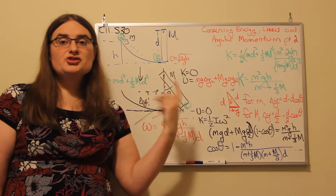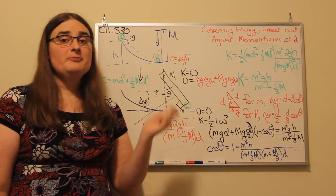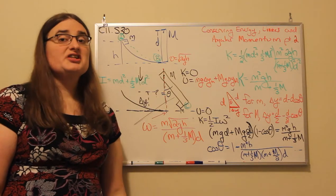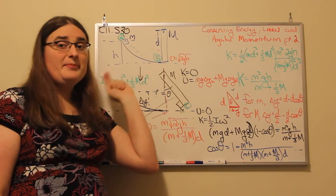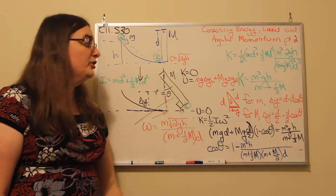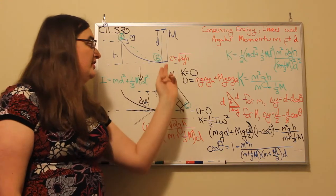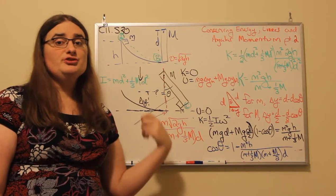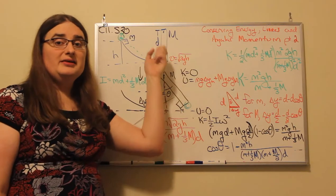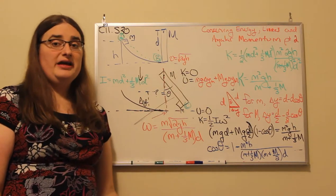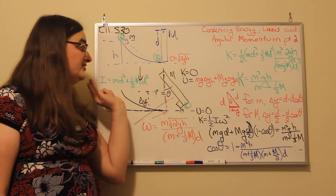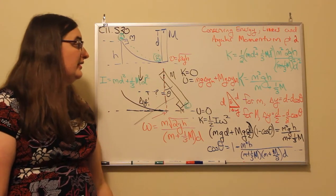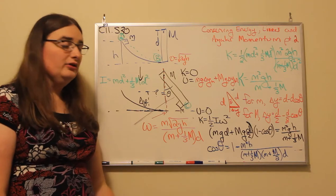In part one we used conservation of energy to figure out how fast that mass would be traveling before the collision. We found the speed before the collision would be the square root of two times the strength of gravity times the distance the mass fell, h.